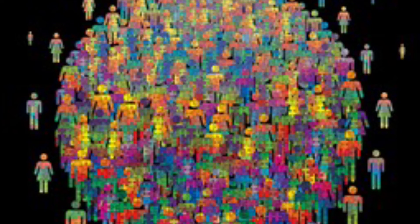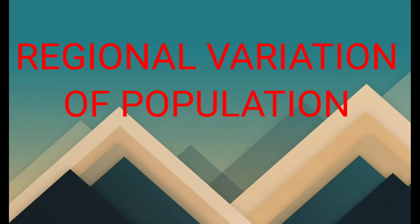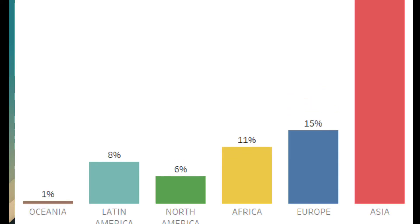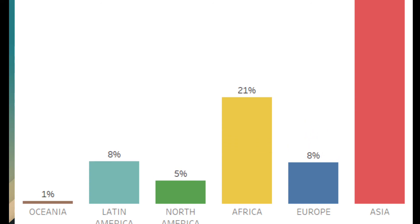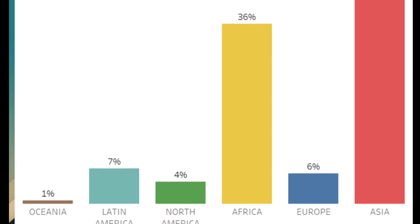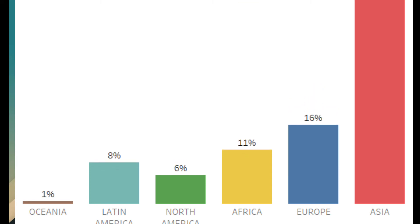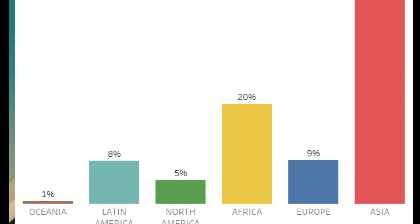According to the United Nations announcement, the world population reached 700 crores on 31st October 2011. But the growth rate of population is not the same in all areas of the world. Now we will see region-wise variation of population. Depending on differences in changing socio-economic development, there had been variation in population growth rate between the developed and developing countries of the world.